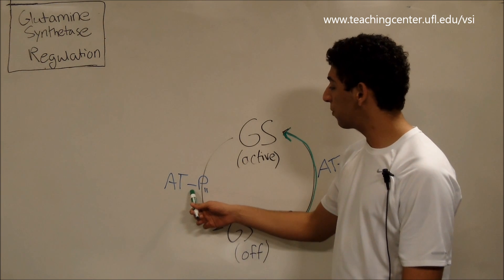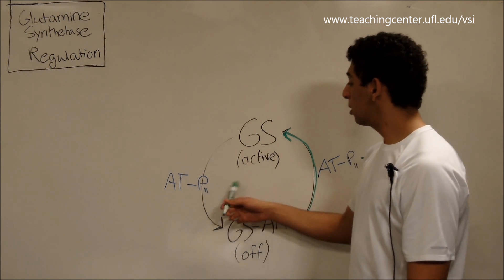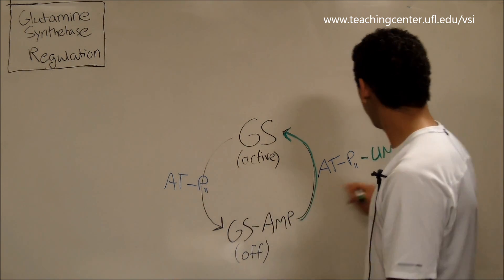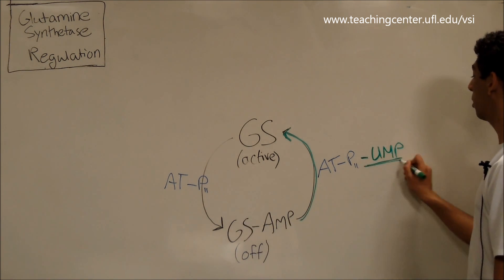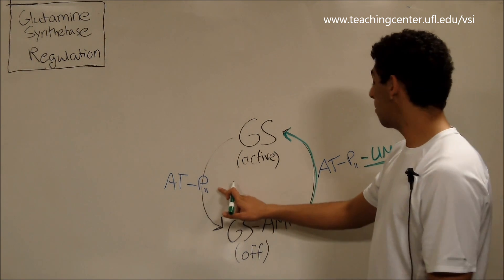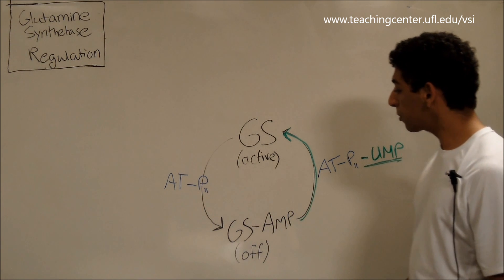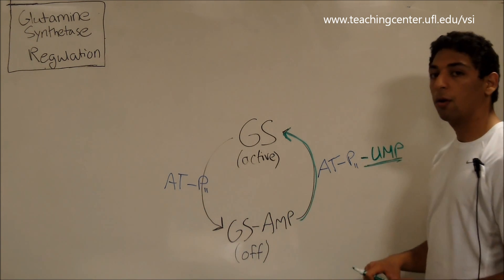So when you have adenyl transferase without the UMP, notice it still has the P2, but it doesn't have the UMP, which is the critical part. So no UMP means that the enzyme is turning glutamine synthetase off.